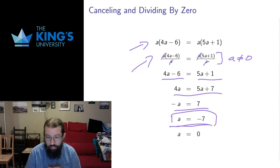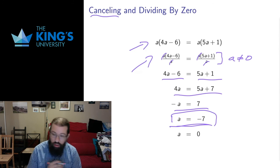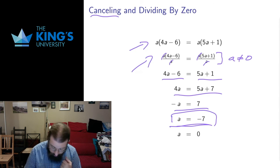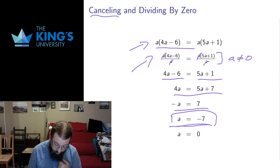Whenever you're dividing by something, or in the term that a lot of you might be used to, whenever you're cancelling something off, you have to also be aware that the thing you're cancelling might have been 0. So I want to also consider the case if a is 0. Let's look back at the original equation.